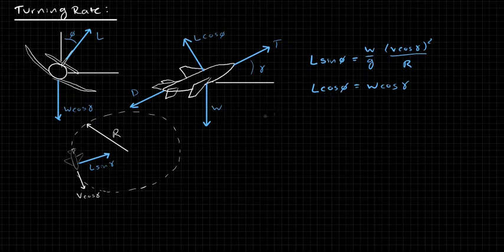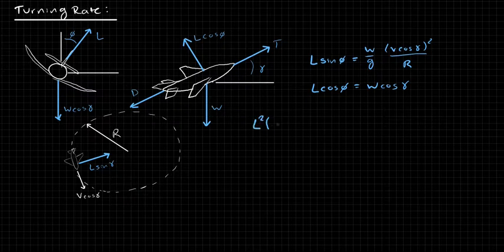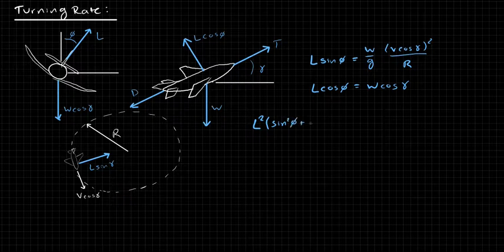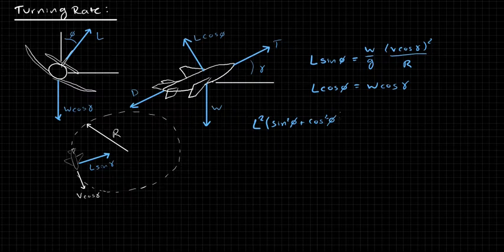There'll be a reason for this, but we're going to just go ahead and start. So the first thing that we do is we square both of these equations, and then we add them together. What that gives us is L squared, sine squared phi plus cos squared phi.